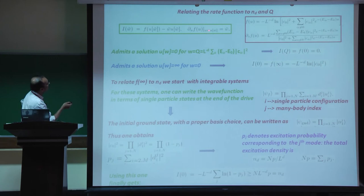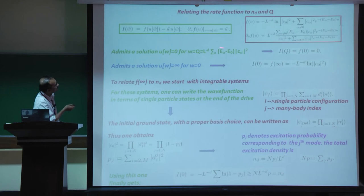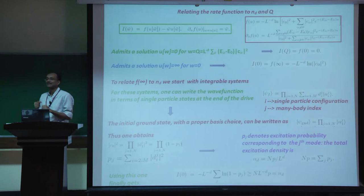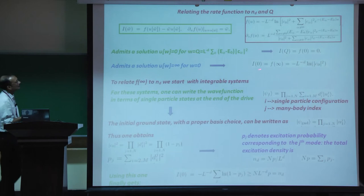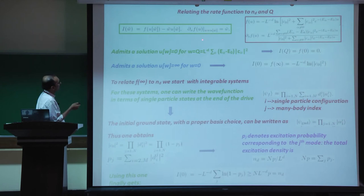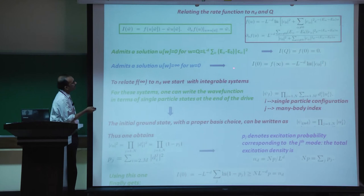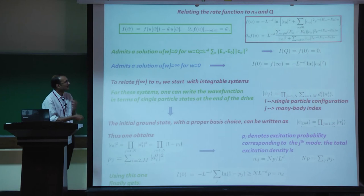Evaluating the derivative of F at u=0 gives Q, so there is a solution where u(w_bar)=0 and w_bar = Q. Therefore I(Q) = F(0) = 0 - at the residual energy, the rate function vanishes, since for a periodic drive the average work and residual energy coincide. For the other result: the solution for w_bar = 0 gives u_bar approaching infinity, and I(0) = F(infinity) = log|c_0|^2.